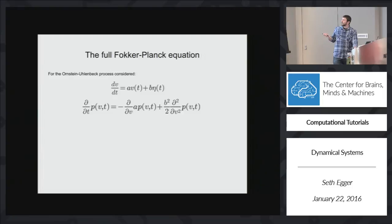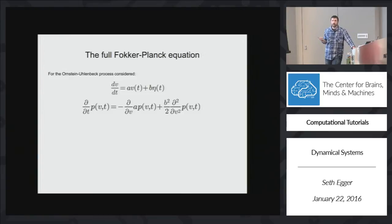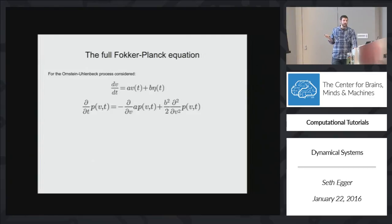So the full Fokker-Planck equation has the term for the drift or the deterministic part, and the term for the diffusion or the noisy part. Add that all together and now you have an equation that tells you how the probability distribution evolves over time. I just want to make it very clear that we have two different equations: one is our model, which says how variable V changes over time, and the other asks what is the probability of V taking some value and how that evolves over time. These are both very useful equations to keep in mind when analyzing stochastic differential equations.